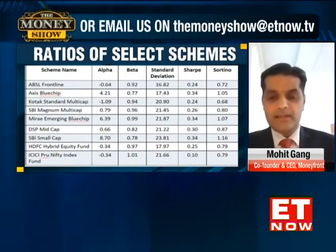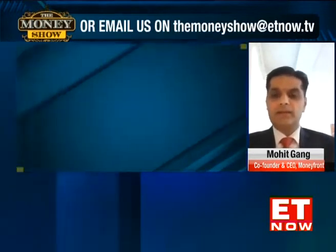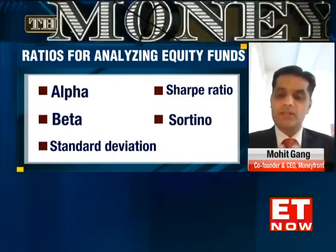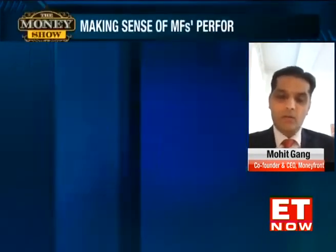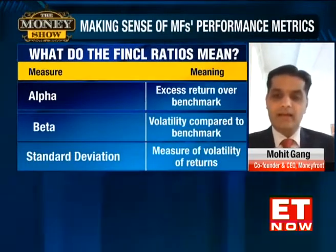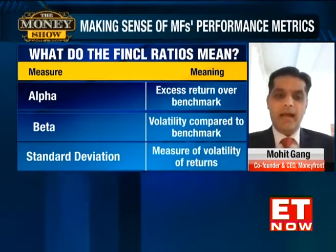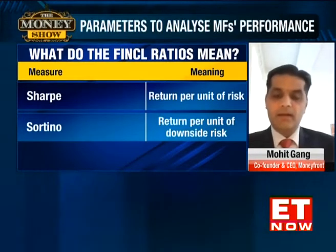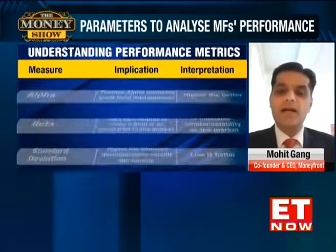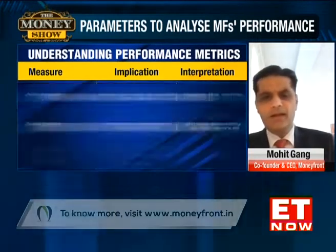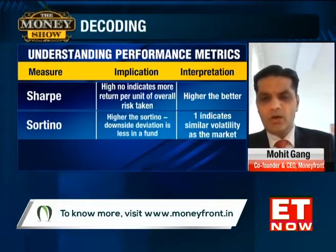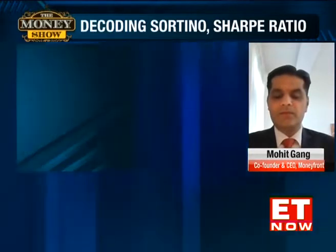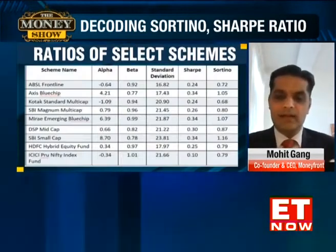But there were critics who said that why should we consider the higher returns, or returns which are above the average returns? They should be eliminated, and only the downside returns or the negative returns should be considered. One should analyze the performance of a fund manager considering how well he has managed downside risk in his scheme. Upside is not risk at all — upside is a bounty to investors. If they're getting more returns than the average returns, then it's great. Ignore that.